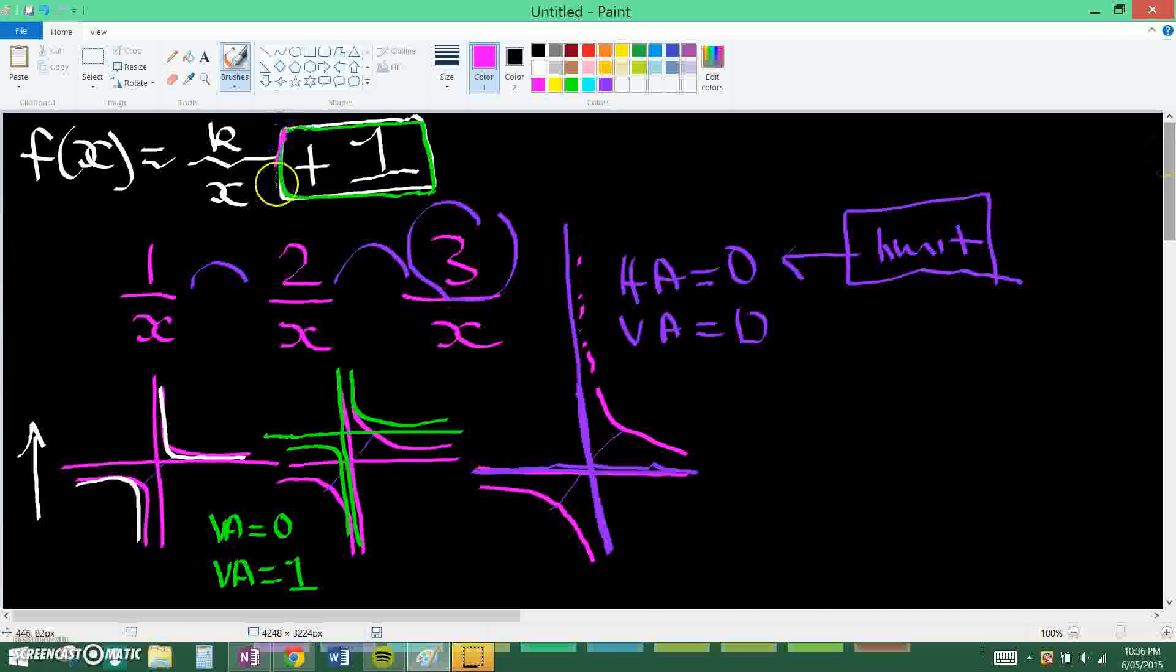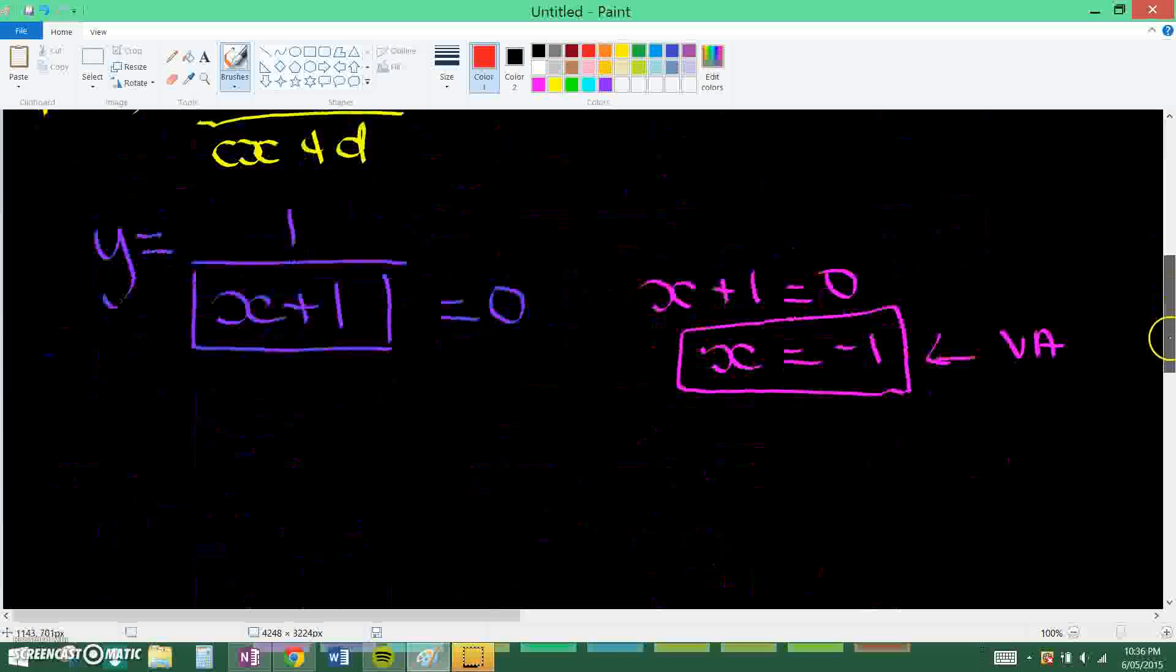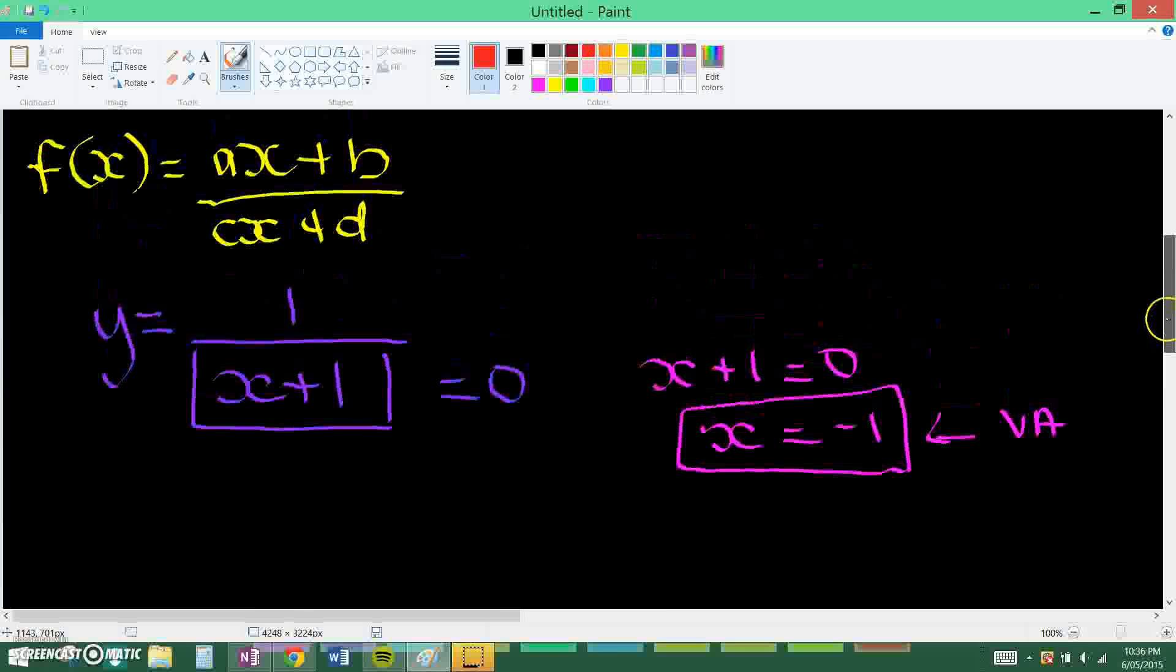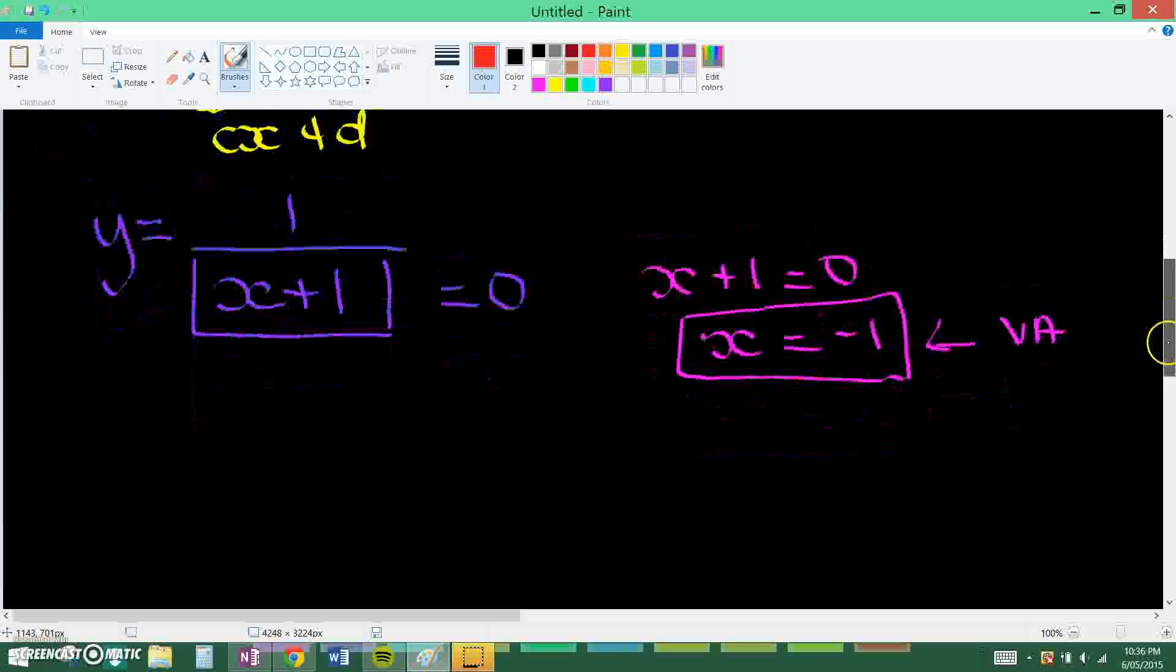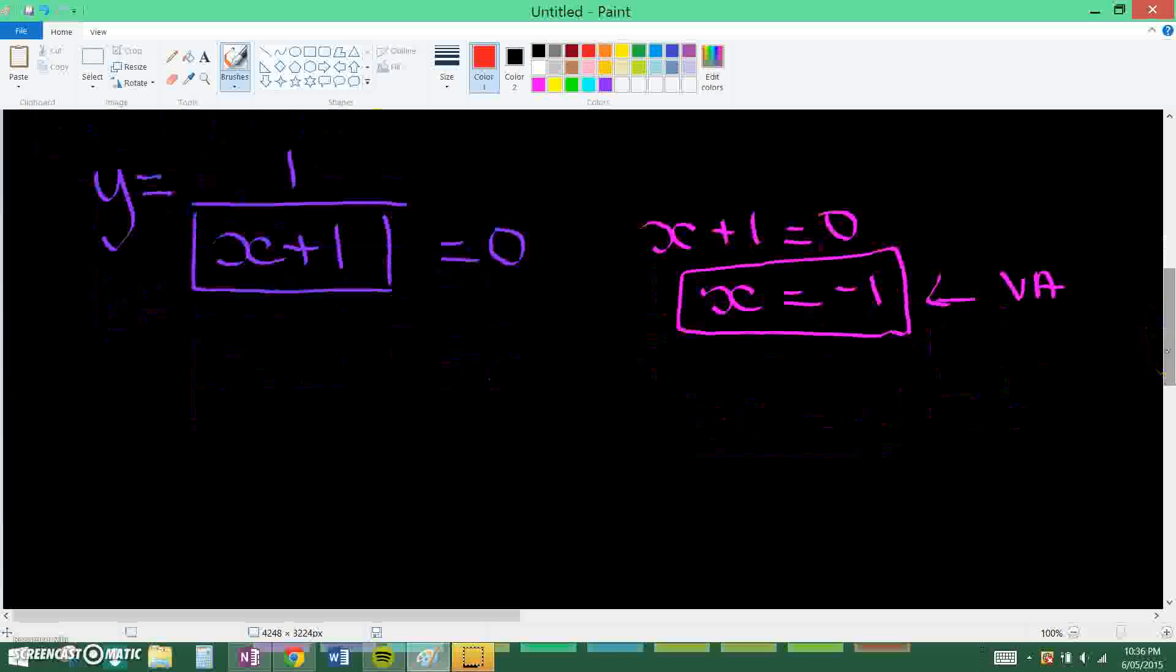Now if you remember above, if we have this then the graph can either go up or down and it just shifts itself up, so the line can either shift up here or down here or down here, the asymptote. Now if you think about this, this function does not have anything here, that means that...